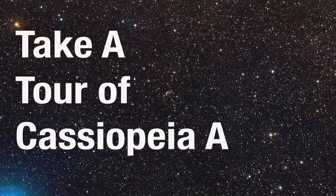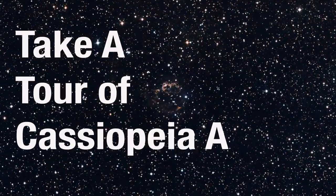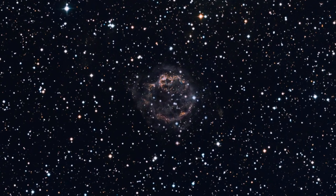Cassiopeia A, or Cass A, is a supernova remnant located 11,000 light-years away in the constellation Cassiopeia.